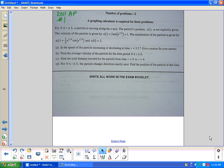They give the velocity equation 2 sine e to the t over 4 plus 1 and the acceleration of the particle, the derivative of velocity, and they give the initial condition for the position.